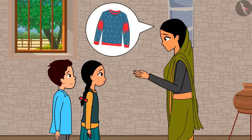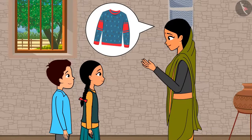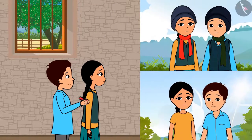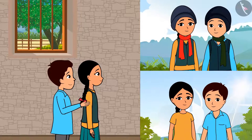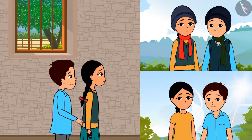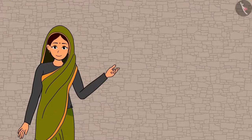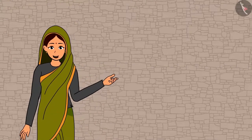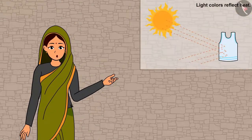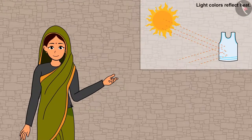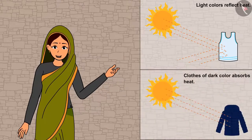Raja, wear something warm. It is getting cold now. Warm clothes give us warmth. In summers, we wear light clothes with light colors. Yes, you are right. We wear light colored clothes in summers because light colors reflect the heat and hence we feel less warm. And in winters, we wear dark colors because dark colors absorb heat and hence we feel warm.